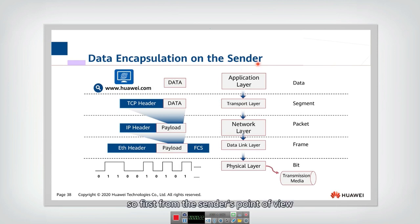First, from the sender's point of view, we assume that if we want to access a web page, for example, this web page, then what should be done in the application layer? Actually, the application layer needs to transmit an HTTP message to the remote web server.